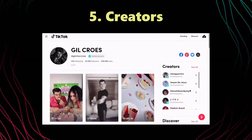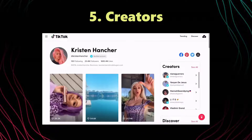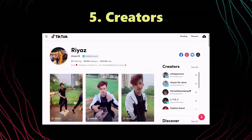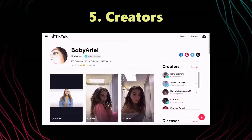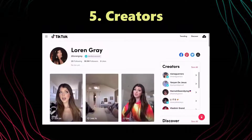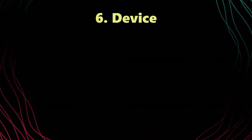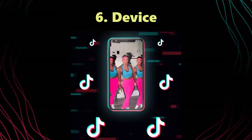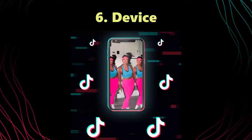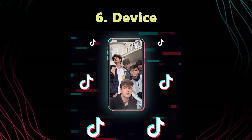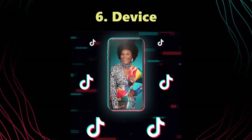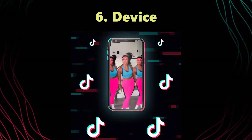Number five is Creators — a relatively new feature of the platform, creator targeting allows you to serve ads to individuals who have followed or viewed the profile of a creator within a predefined list of categories such as DIY. This is a gentle nudge for marketers to dip their toes into influencer marketing. Number six is Device — extremely granular device targeting is available, including operating system and version, device model down to an iPhone 4S, connection type, carrier, and device price.